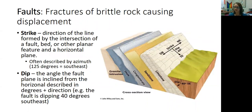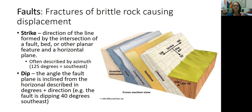When geologists describe faults, they use words like strike and dip. Strike is the direction of the line formed by the intersection of the fault with Earth's surface. So if you found a fault and walked along it on the surface, you would be walking along the strike. We describe that strike using azimuth degrees — for example, 125 degrees from north, which is to the southeast. The dip is the part below Earth's surface — that's the angle of the fault below the horizontal plane.